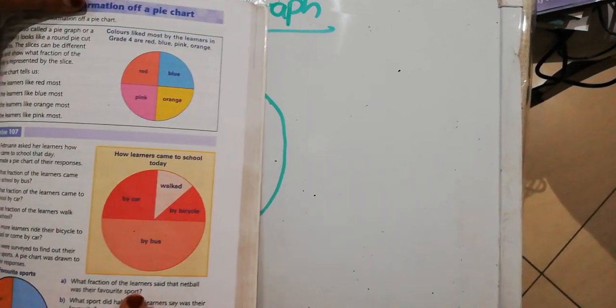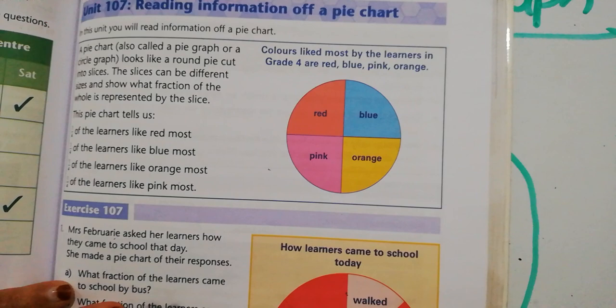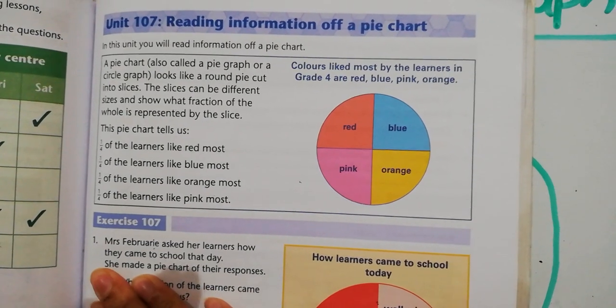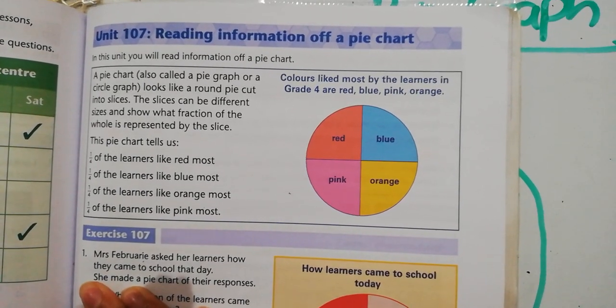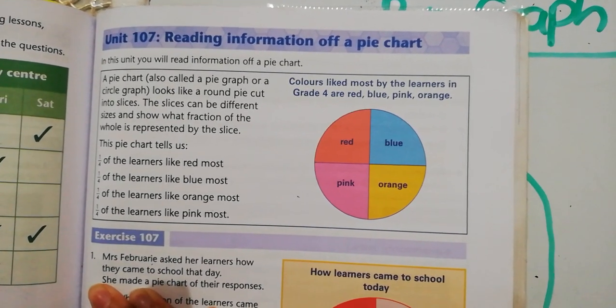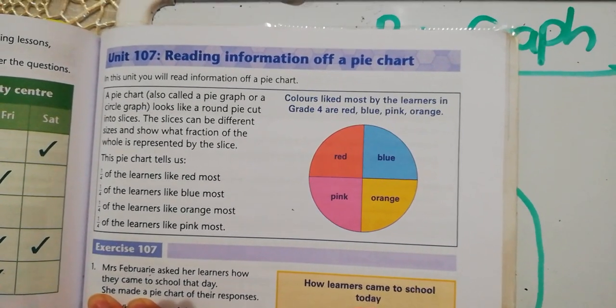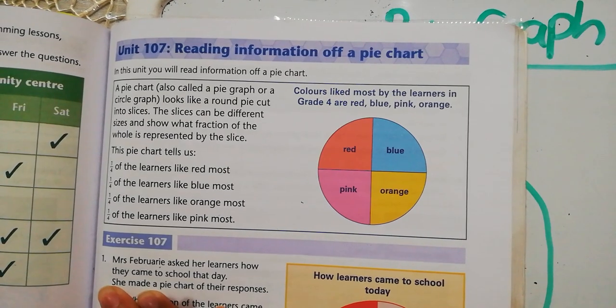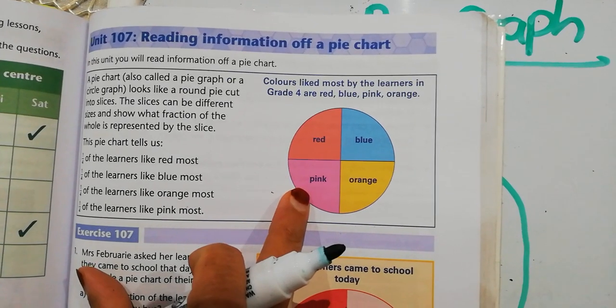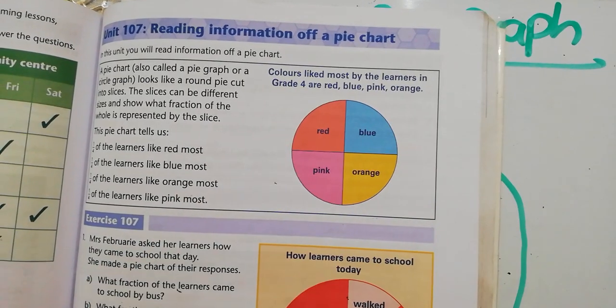Let's look at the example in the textbook. It says a pie chart, also called a pie graph or a circle graph, looks like a round pie cut into slices. The slices can be different sizes and show what fraction of the whole is represented by the slice. So again, a whole pie or a whole pizza. And when you cut it or you use up from that pie, that represents a fraction. If you look at the red, the blue, the orange and the pink, it's different colors. Each one is a quarter. And each quarter, when you add it all up, makes the whole.